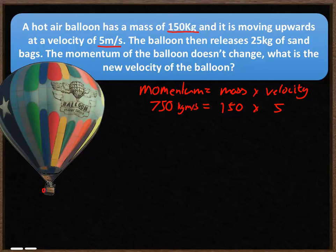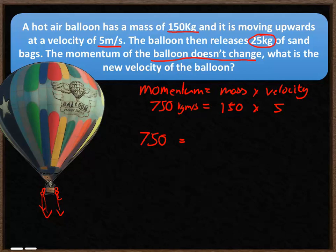After releasing the sandbags, the momentum remains 750 kilogram meters per second. The mass has decreased by 25 kilograms, so the new mass is 150 minus 25, which equals 125 kilograms.